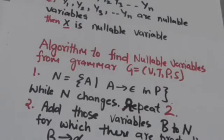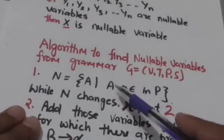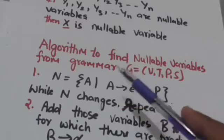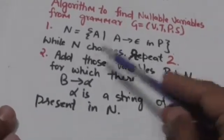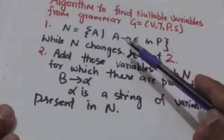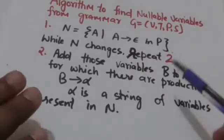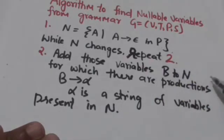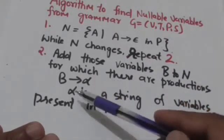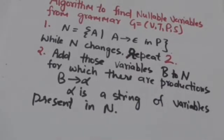To find nullable variables from grammar G, first make a set N and add those variables A for which there is a production of the form A derives empty string in set P of grammar G. After this, repeat Step 2 while N changes. In Step 2, we add those variables B to N for which there are productions of the form B derives alpha, where alpha is a string of variables already present in set N.